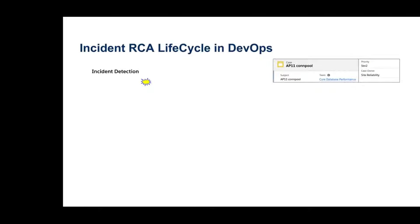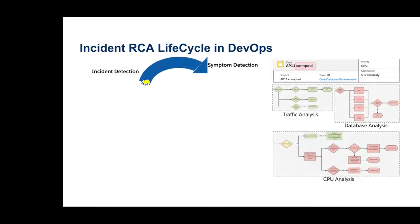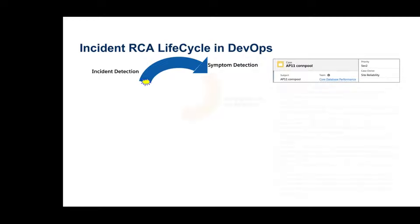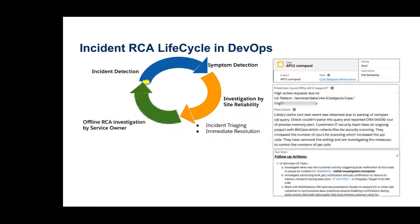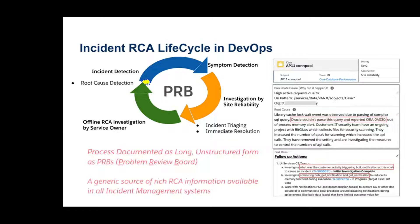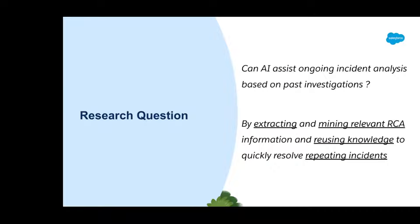The incident root cause analysis lifecycle follows this flow: we first do incident detection, then symptom detection, followed by investigation by the site reliability team who triages the incident and finds an immediate resolution, and then RCA investigation by service owners to find the root cause. This entire process is documented in long, unstructured documents known as PRBs, or Problem Review Board data, which are a generic source of rich RCA information available in all incident management systems. Our main research question was: can AI assist ongoing incident analysis based on past investigation data in the PRBs?